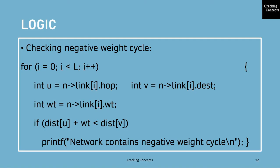And here the case is, if we get a distance lesser than the existing distance, so if this condition is true again after traversing all those loops, then that means the network contains a negative weight cycle. The message is printed accordingly.